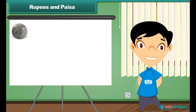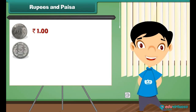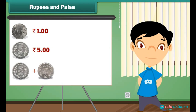1 rupee is written as Rupee 1. 5 rupees is written as Rupees 5. 7 rupees and 50 paise is written as Rupees 7.50.